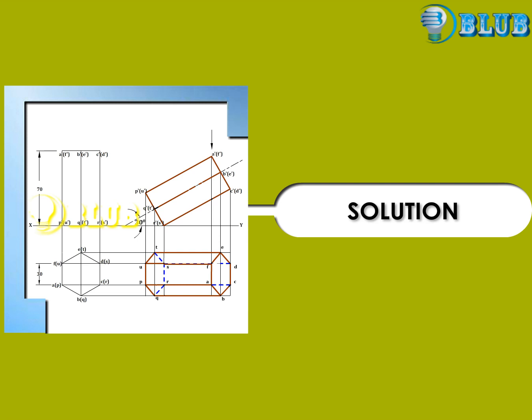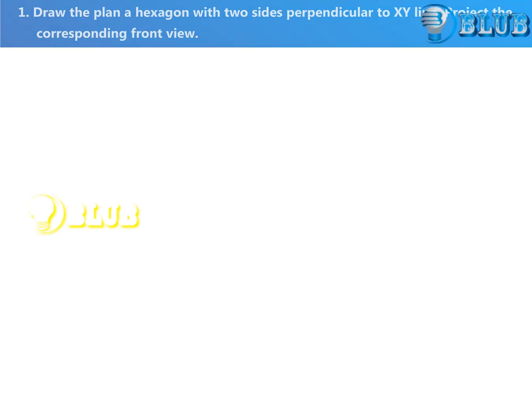Solution to Example Problem. Draw the plan: a hexagon with two sides perpendicular to the XY line. Project the corresponding front view.